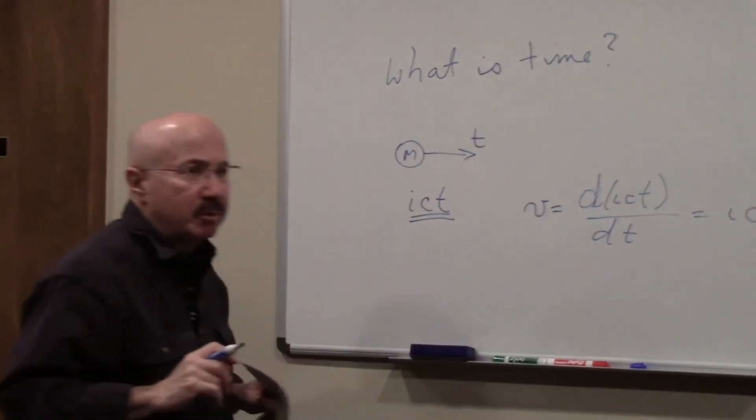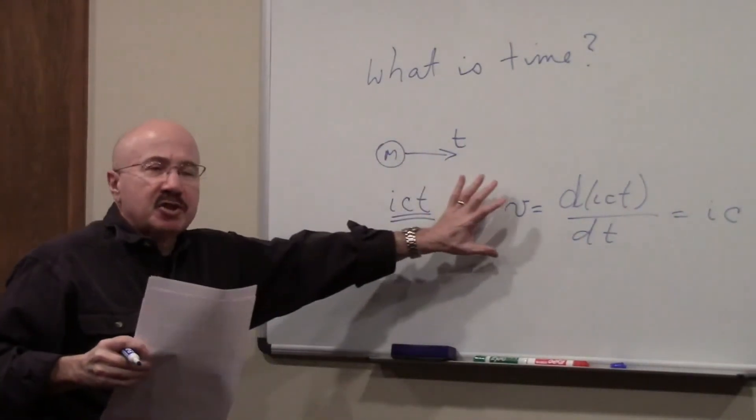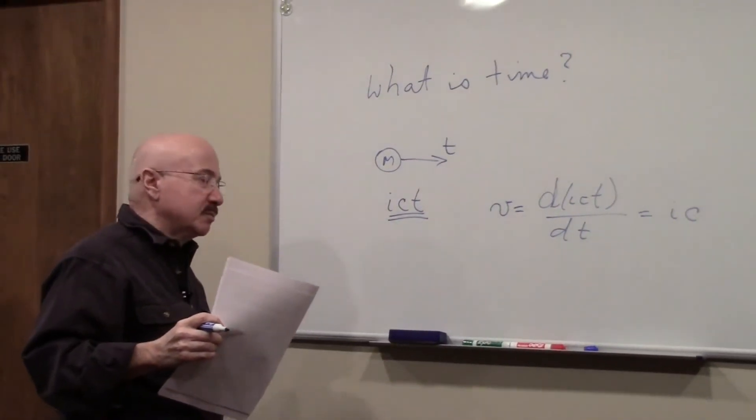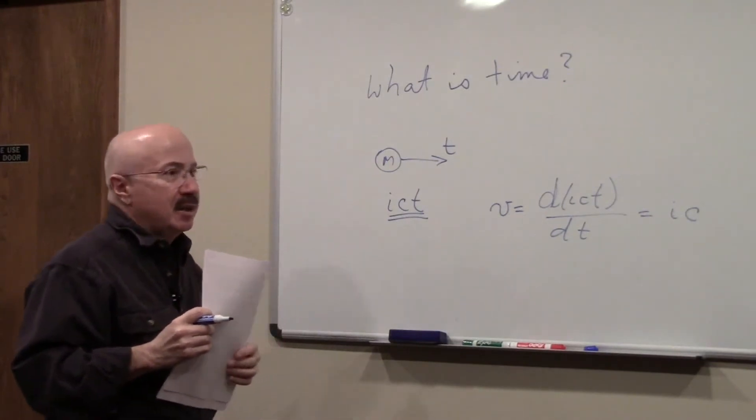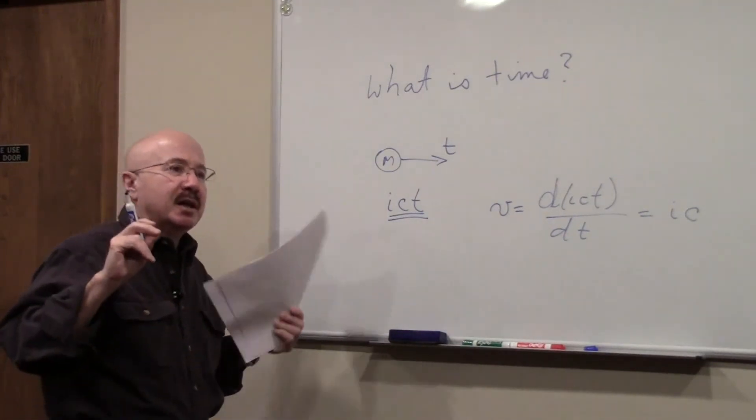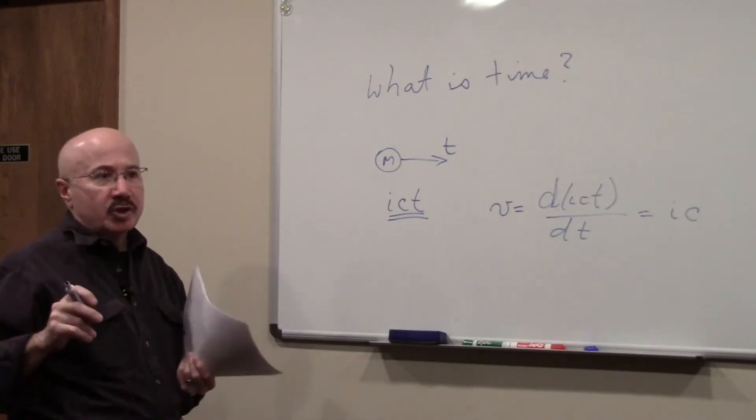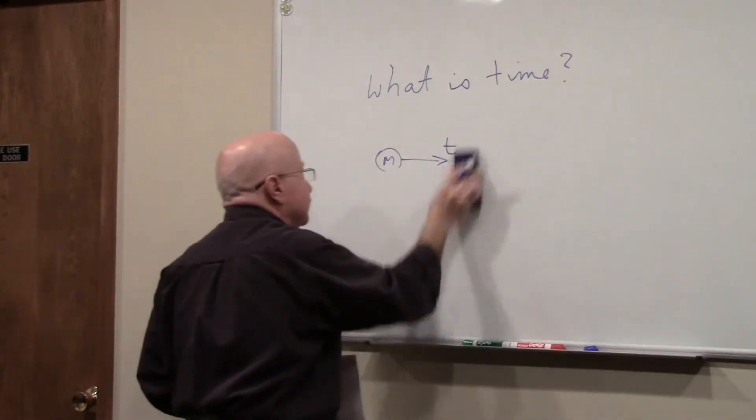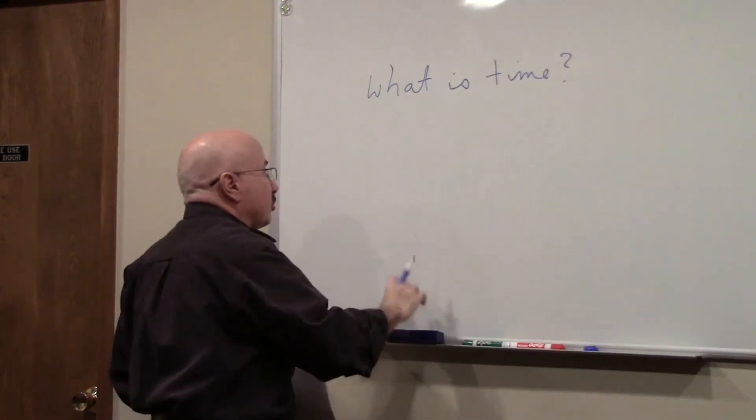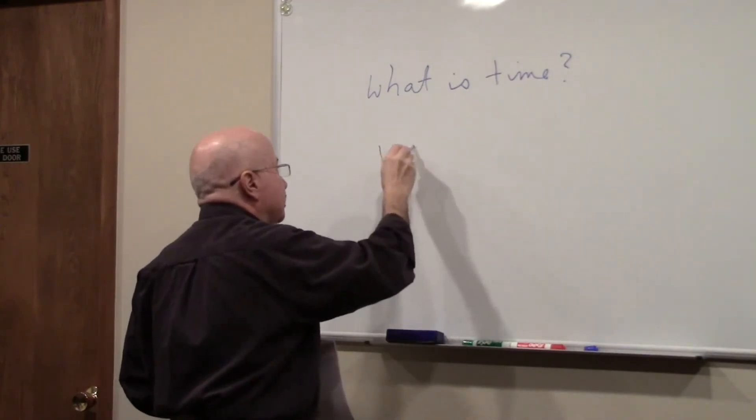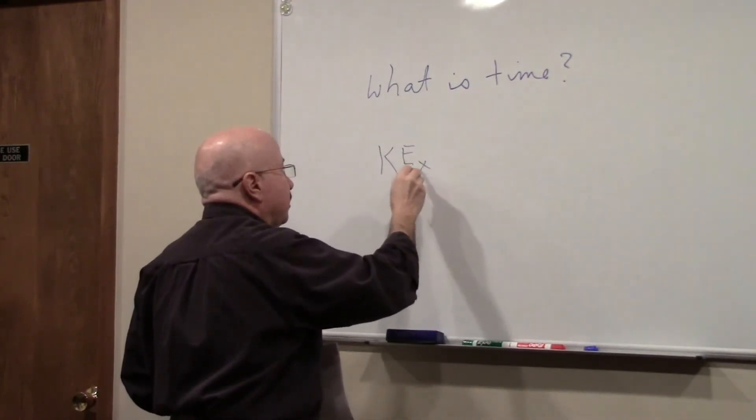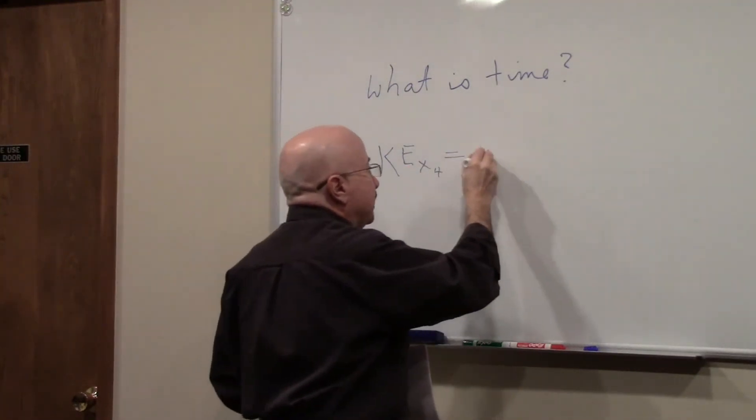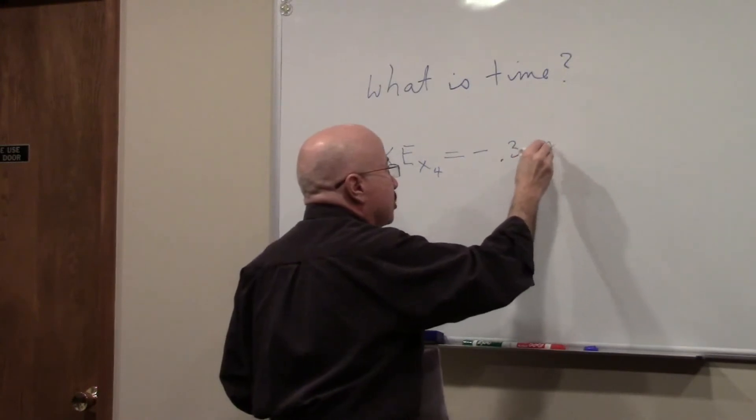And you really don't have to understand all this. I'm just saying that's how you determine the velocity in the fourth coordinate movement in time. And then if you take Einstein's kinetic energy equation and you plug in this velocity into that equation, you get a very interesting result. You find out that the kinetic energy for any mass moving in the fourth dimension is equal to minus 0.3 MC squared.